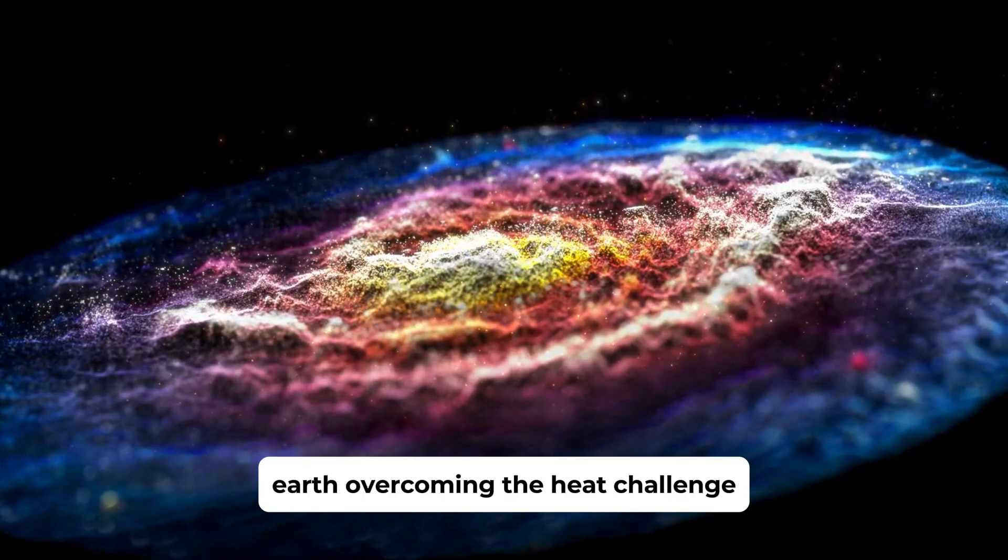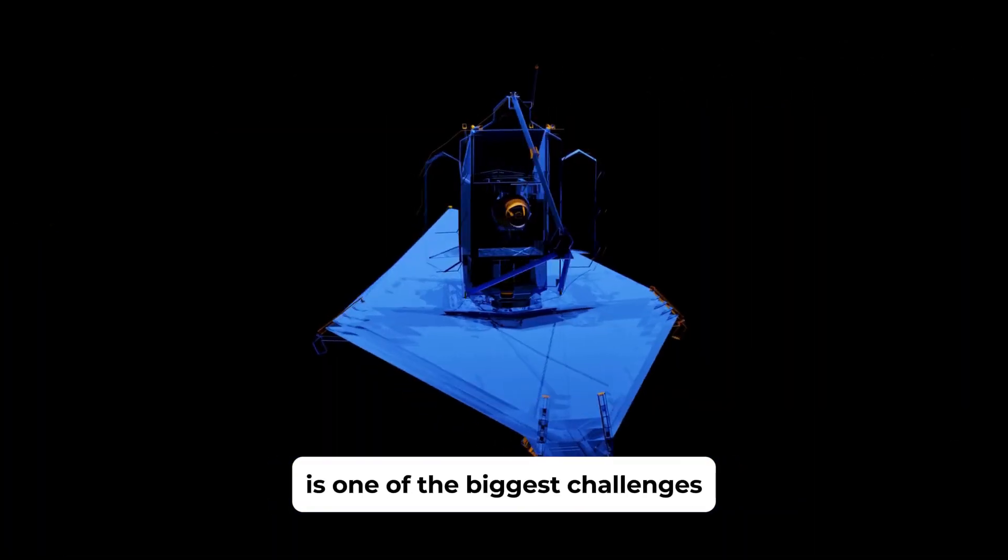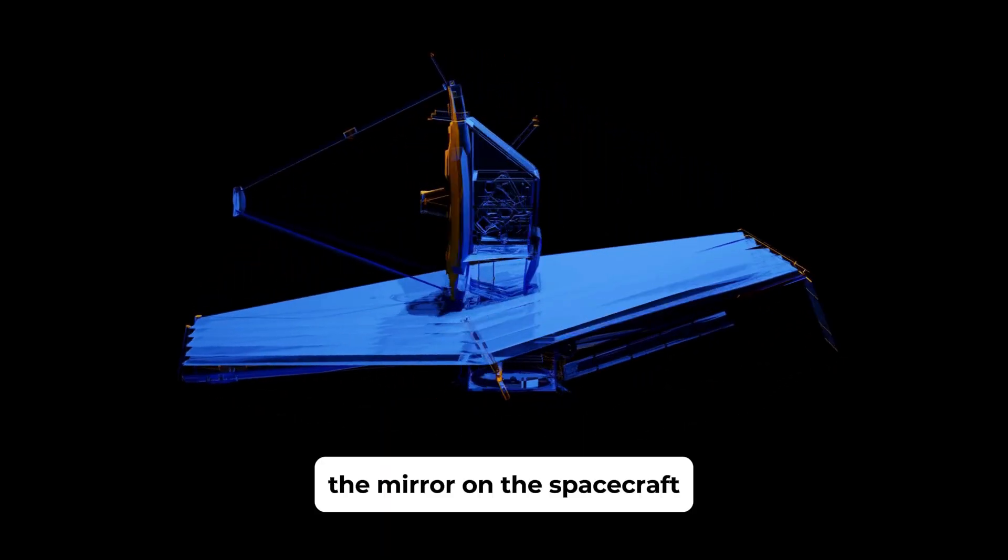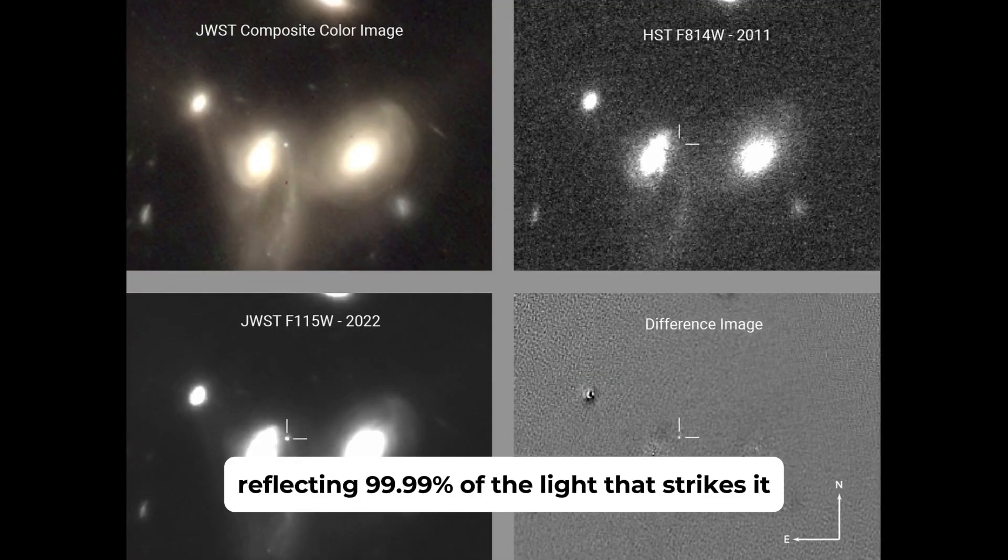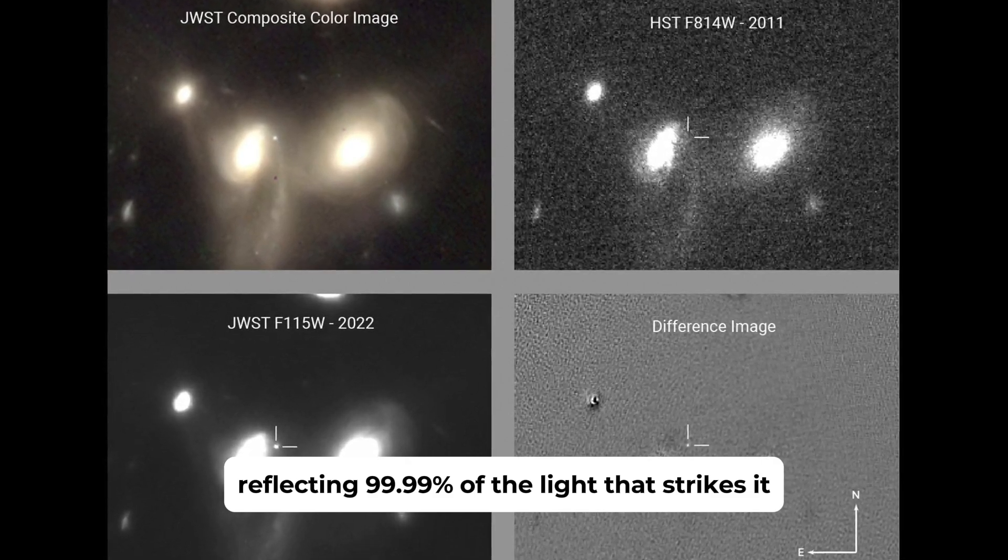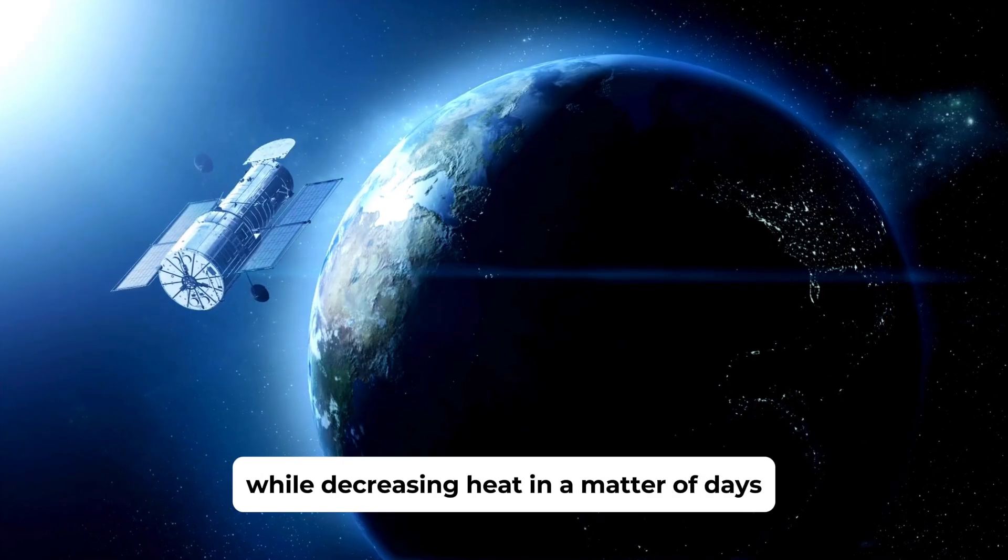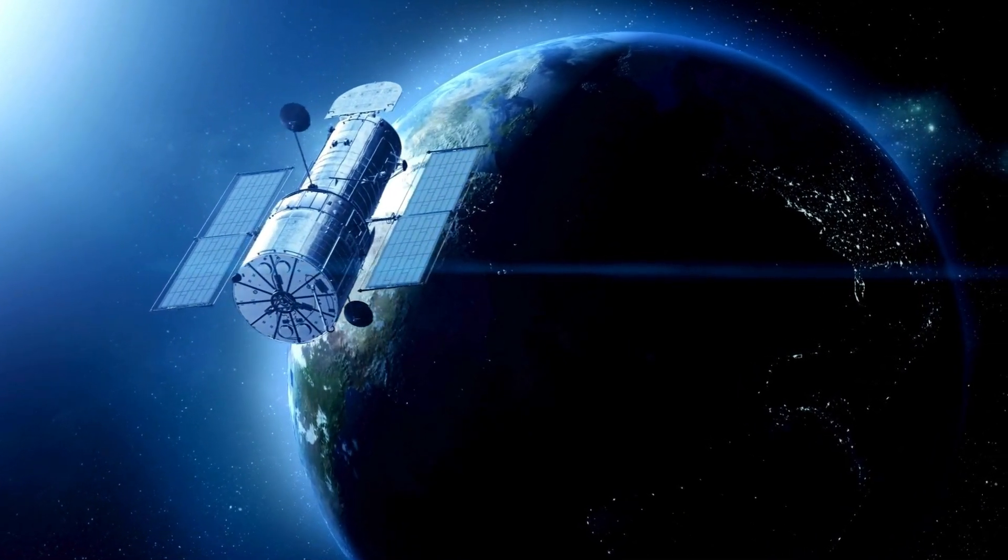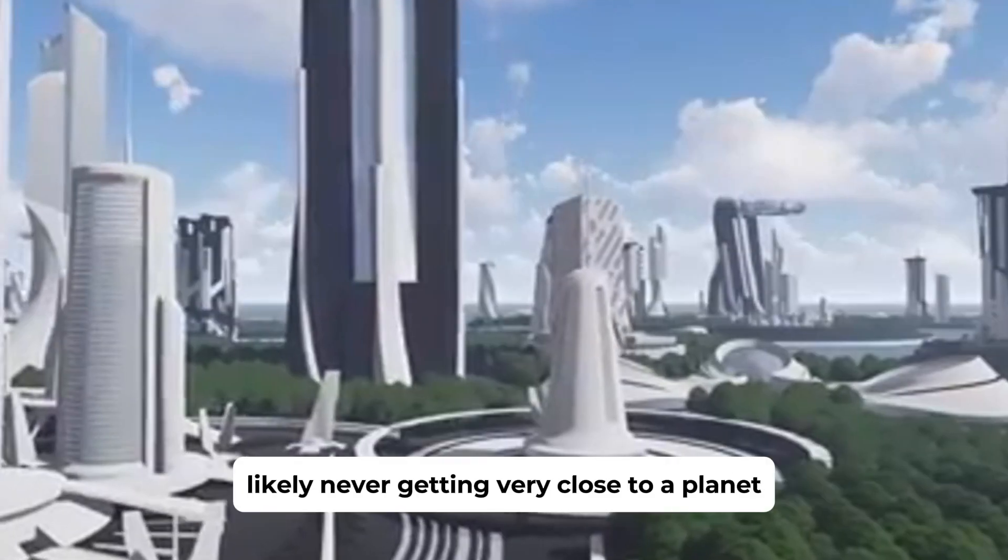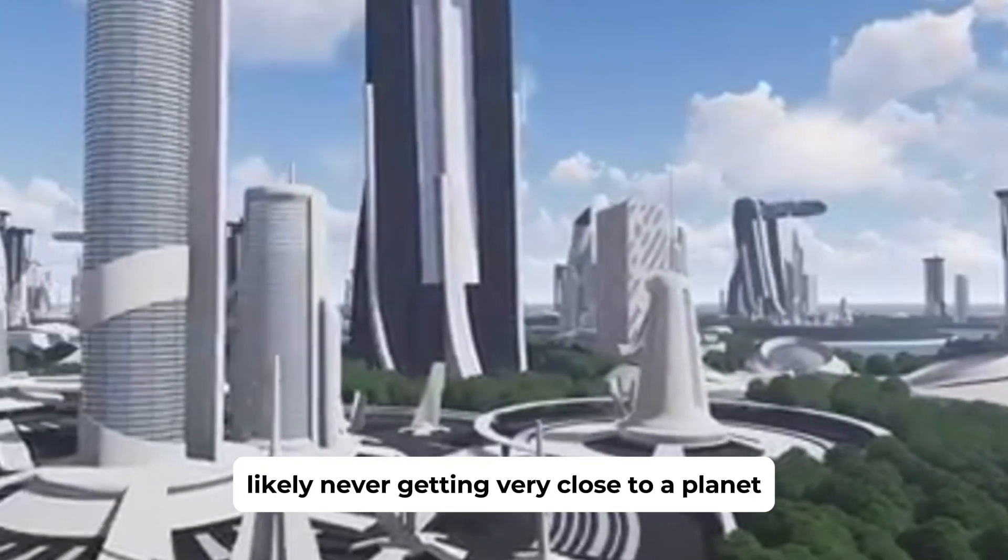Overcoming the heat challenge. Preventing the probe from melting is one of the biggest challenges. The mirror on the spacecraft must be practically perfect, reflecting 99.99% of the light that strikes it, doubling the momentum transfer while decreasing heat in a matter of days. Once launched, the probe would traverse the Alpha Centauri system, likely never getting very close to a planet.